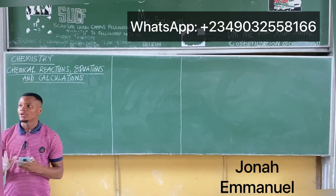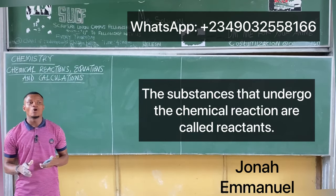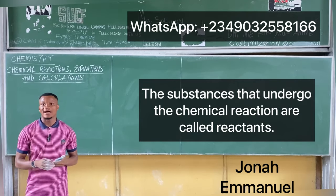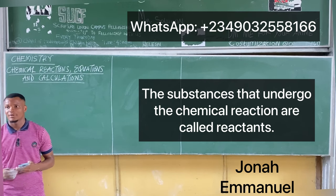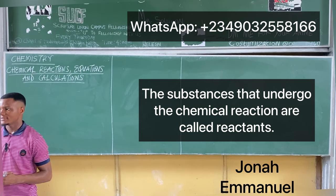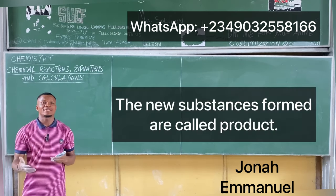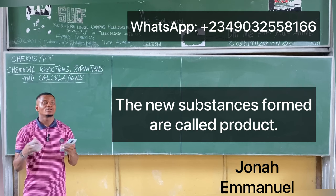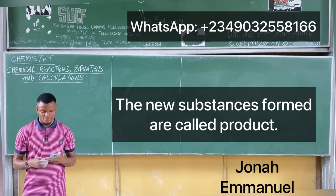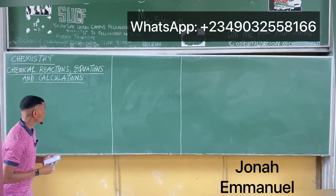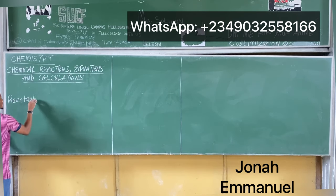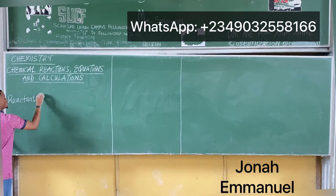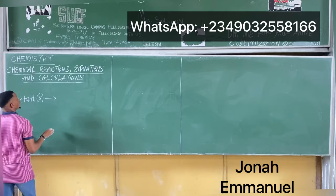The substances that undergo the chemical reactions are called reactants, while the new substances formed are called products. Usually for a chemical reaction, you can write reactants giving products.